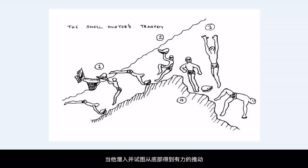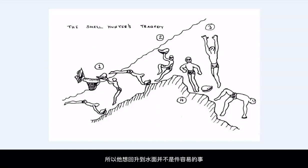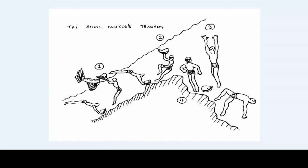But when he goes down and tries to get a good push off the bottom, the water is a little deeper than where it was before. He cannot push off as hard at point 4 as he was wanting to, so he is not able to reach the surface easily. He is now getting desperate and starts to panic. He tries desperately for the surface, but sadly doesn't make it at point 3. The cramp has most certainly got the best of him, and he goes down, down, and down to tragedy.